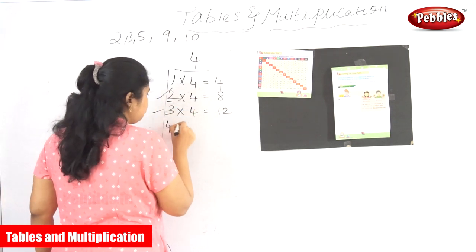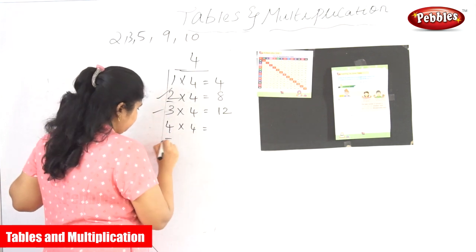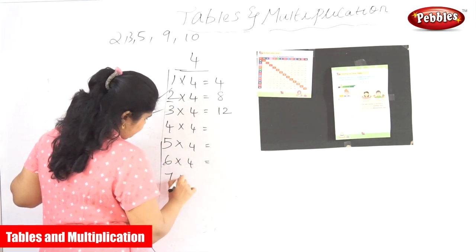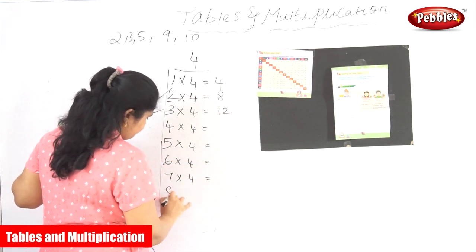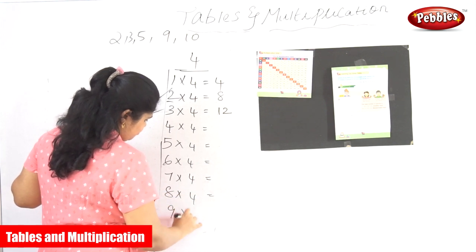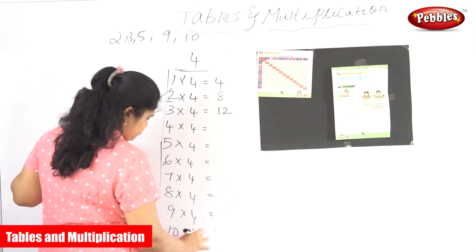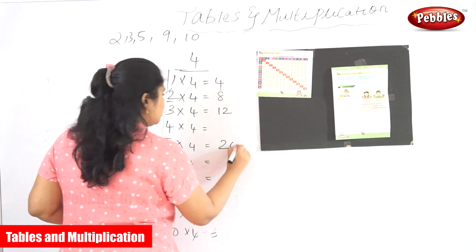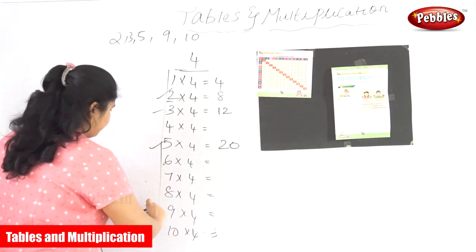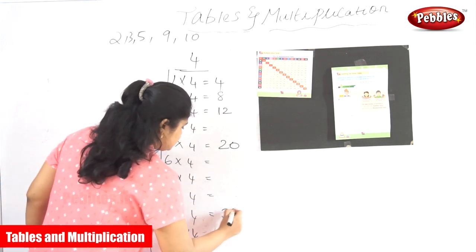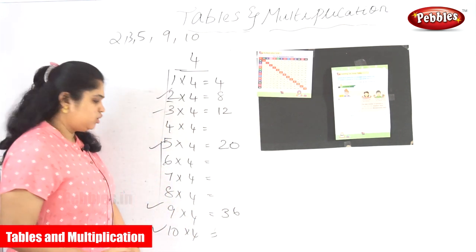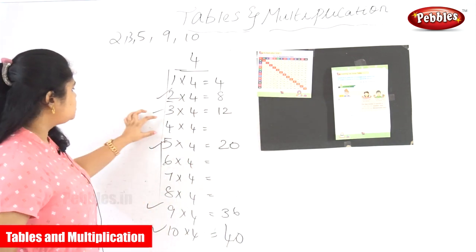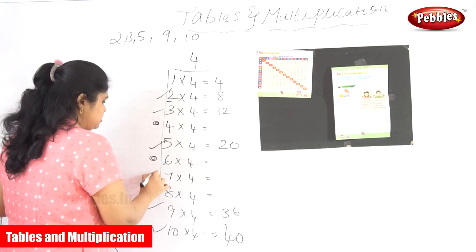For the 4th one, I am just writing the questions first. So 5 into 4 — already we have read that 5 into 4 is 20. The next number we have read is 9: 9 into 4 is 36. Next we have read the 10th table: 10 into 4 is 40. So the numbers we are going to concentrate on are 4, 6, 7 and 8 — only 4 numbers.